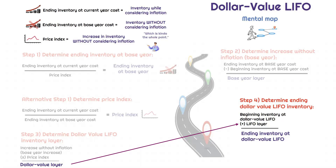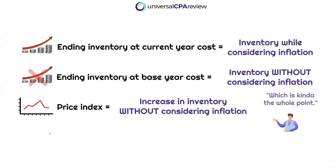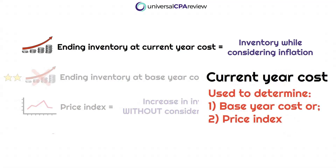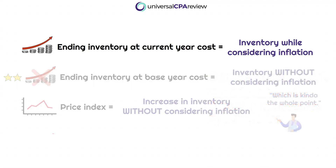Three key terms to keep in mind. We focus primarily on inventory at base year — the whole idea of Dollar Value LIFO is to calculate inventory without considering the impact of inflation, bringing it back to a pre-inflationary value. That's what we use in steps one and two, and it's different from inventory at current year cost. For exam purposes, current year cost is only used to facilitate calculating base year information — specifically, the ending inventory at base year cost or the price index — because it's the base year layer we apply to the price index, not the current year layer.